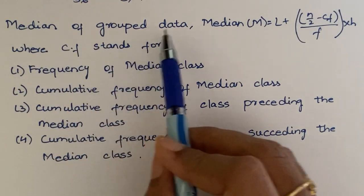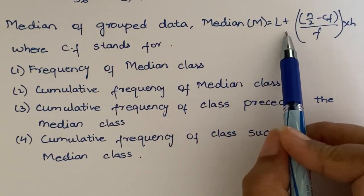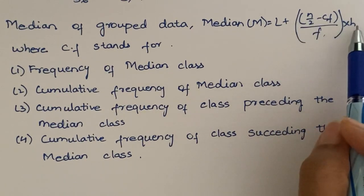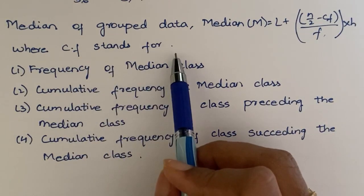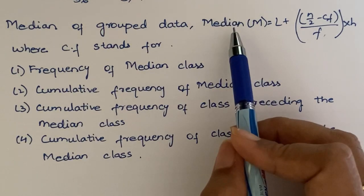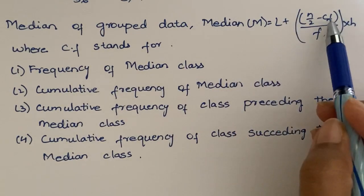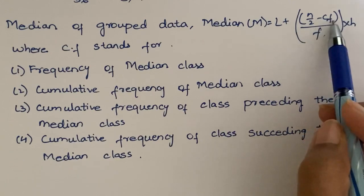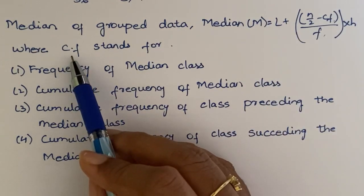Median of a grouped data, median m is equal to l plus (n/2 - cf)/f into h. Where cf stands for? So, median, cf here - we know this cf is cumulative frequency. But here cf is the cumulative frequency of the median class, preceding the median class, or succeeding the median class.